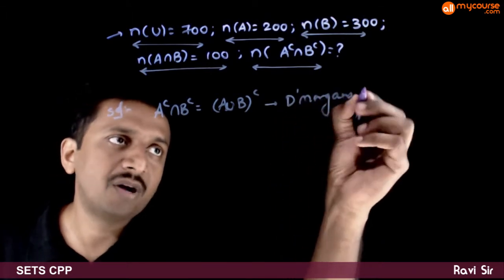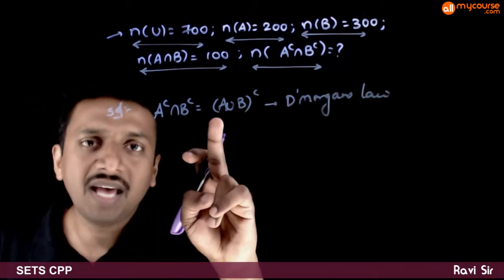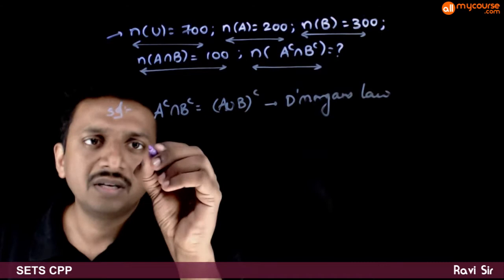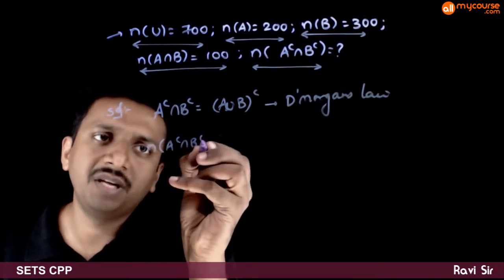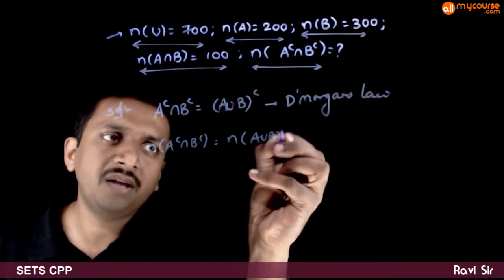De Morgan's law. A complement intersection B complement is A union B whole complement. N of A complement intersection B complement is nothing but n of A union B whole complement.